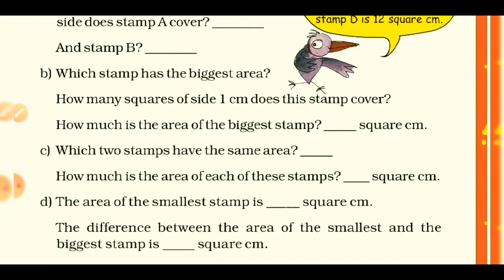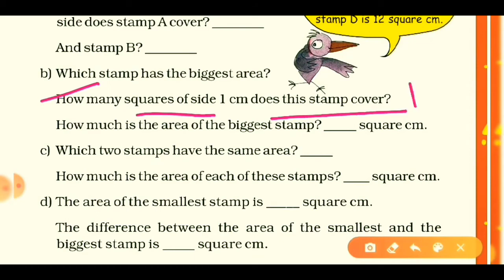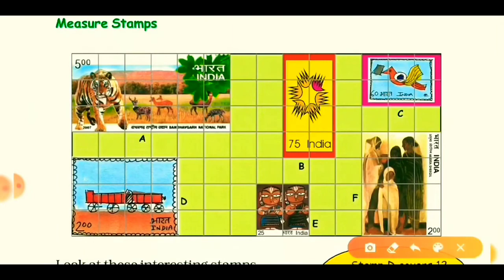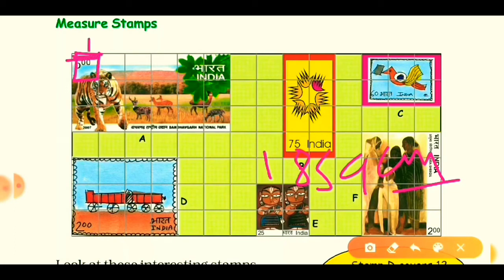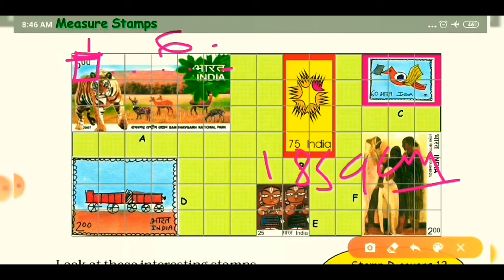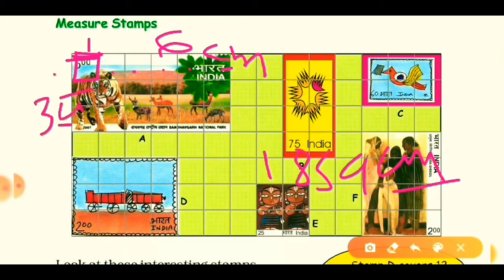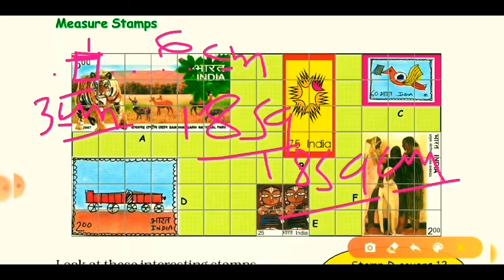Next question: how many squares of side 1 centimeter does stamp A cover, and what is its area? The answer is 18 squares, so the area is 18 square centimeters. Each square has a side of 1 centimeter, so count horizontally: 1, 2, 3, 4, 5, 6 — that's 6 centimeters for the length. The breadth is 1, 2, 3 — that's 3 centimeters. So 6 × 3 = 18 square centimeters.